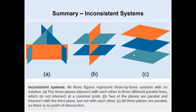In summary, there are three different ways the planes can be arranged for an inconsistent system. The first is like a triangular prism, where pairs of planes intersect along parallel lines with no common intersection. The second has two parallel planes intersecting the third plane but not each other. The third has all three planes parallel, so there is no point of intersection.